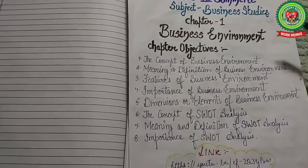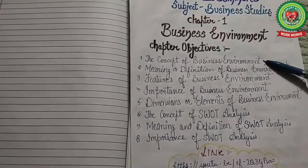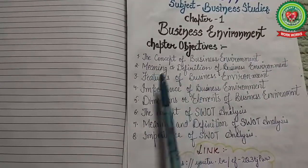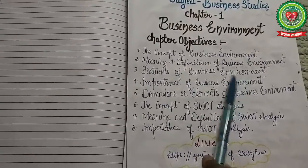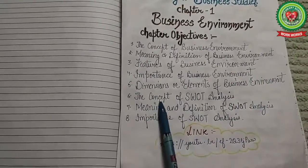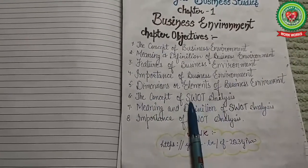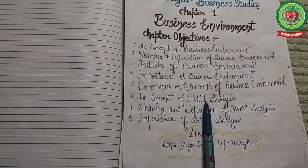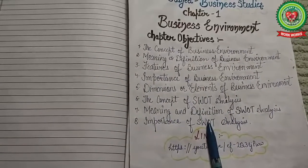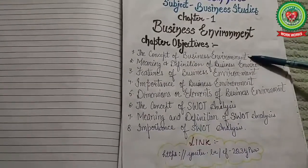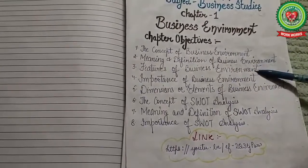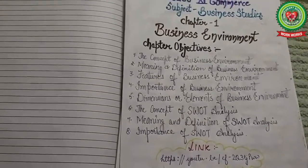So as we go on to the first chapter, that is Business Environment, its objectives are: to know about the concept of business environment, to discuss the meaning, definition and features of the business environment, its importance and dimensions. Then we will discuss the concept of SWOT analysis — SWOT means Strengths, Weaknesses, Opportunities and Threats — and the meaning, definition and importance of SWOT analysis.